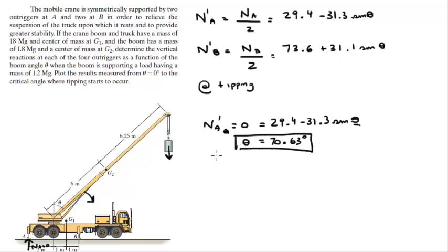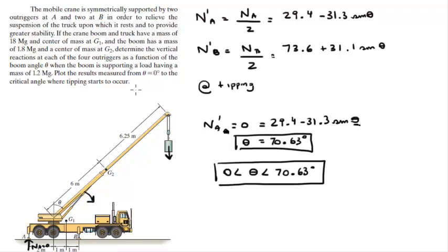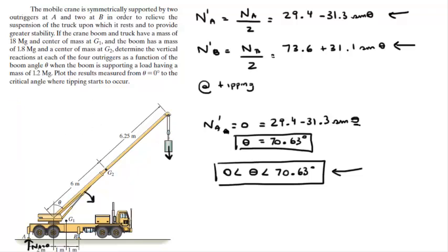What does that tell us? That theta can be between 0 and 70.63 degrees. Now let me switch to Excel and show you how to plot this. The domain of theta runs from 0 to 70 degrees. We'll use 5-degree increments, so you enter 0 and 5, select both, and drag down all the way to 70. Then in the next column you need to convert to radians, because Excel's sine function takes radians by default. So multiply the degree value by π and divide by 180. Drag that formula down to get all radian values from 0 to 70 degrees.